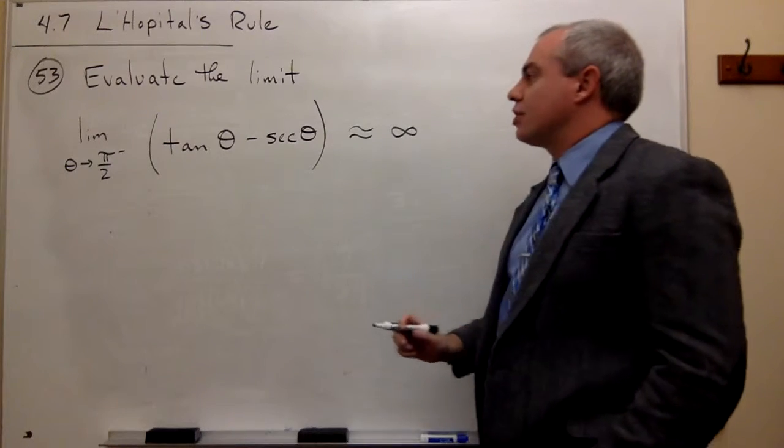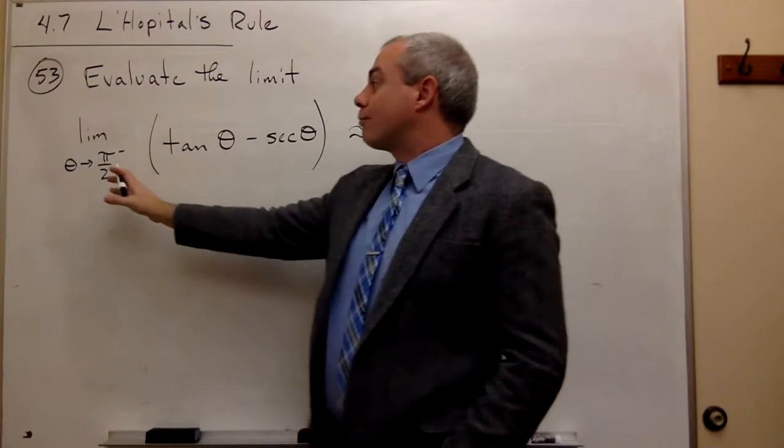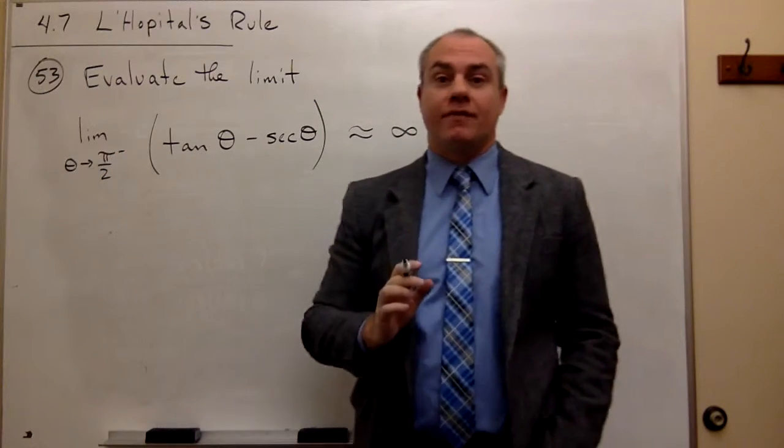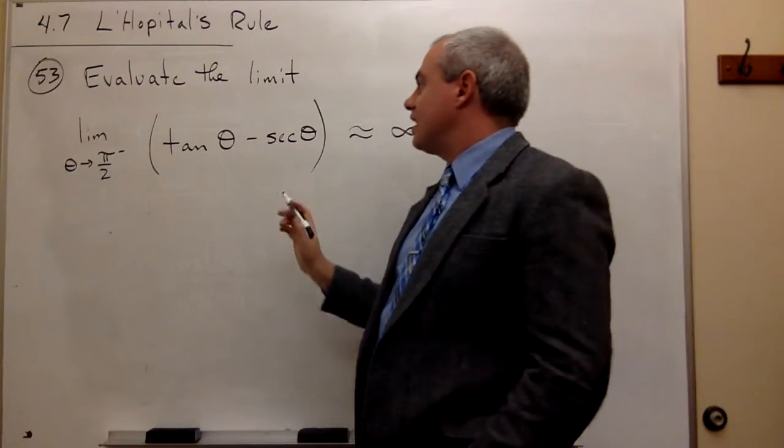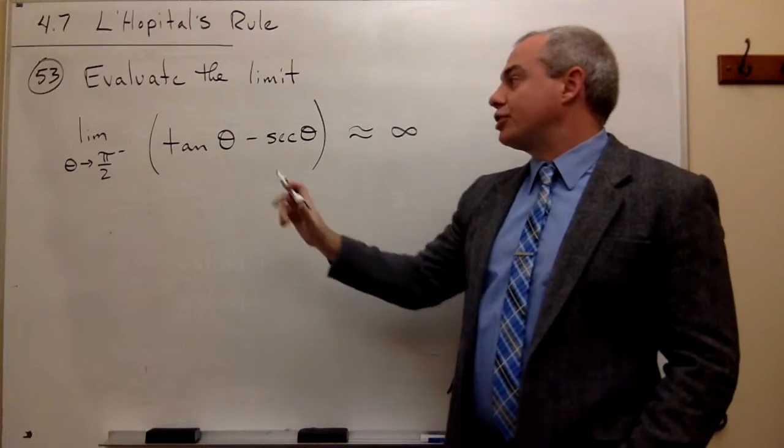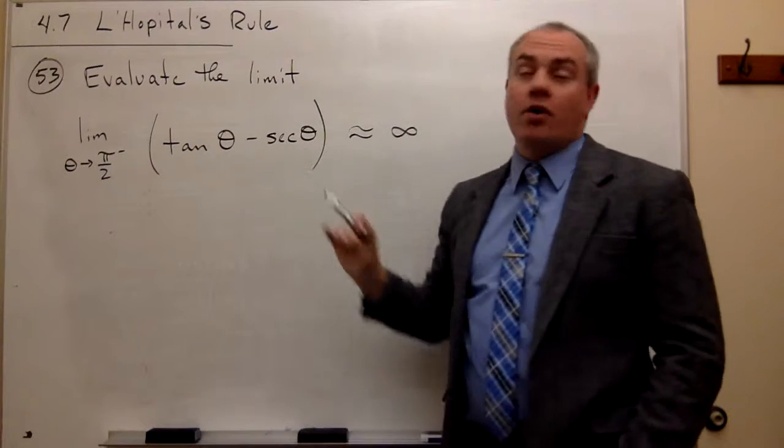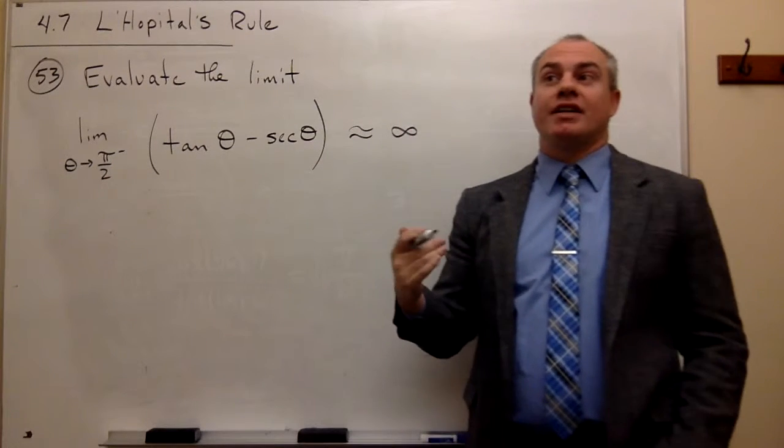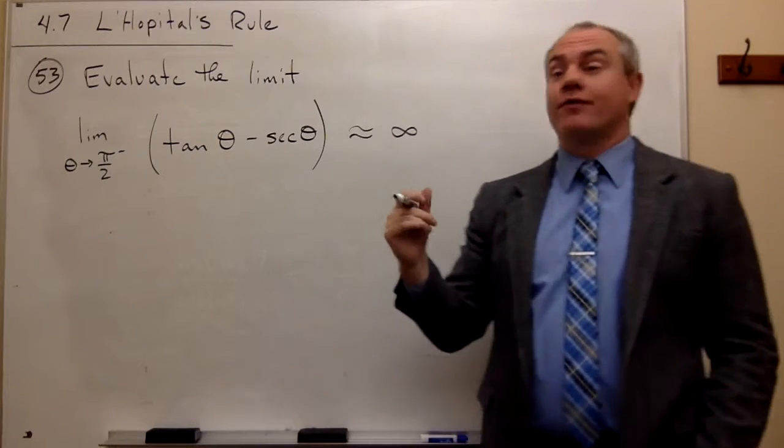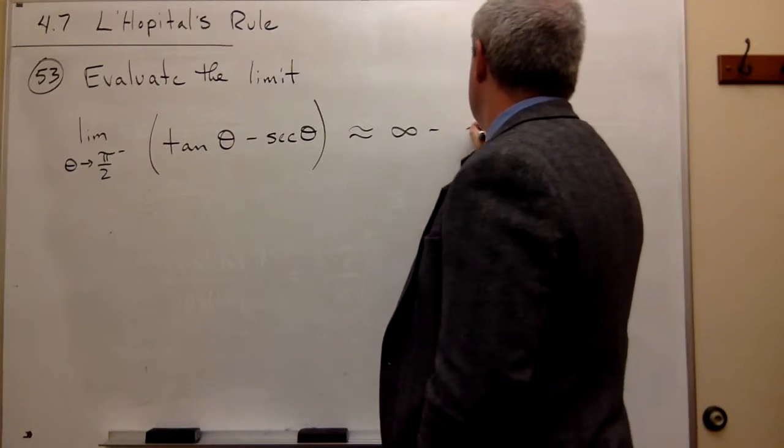So if I plugged in pi over 2, or at least I approached pi over 2 from the left in tangent, I'd get positive infinity. What about for secant? Well, secant is 1 over cosine. And again, I'm approaching pi over 2 from the left in cosine. Well, cosine gets close to 0 at pi over 2, and 1 over 0 is like infinity.